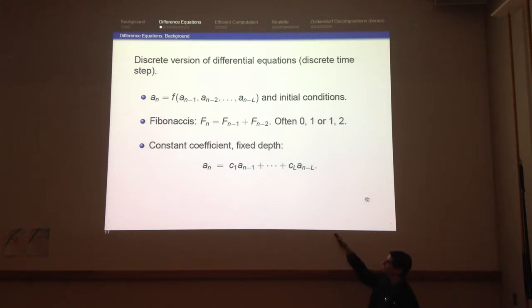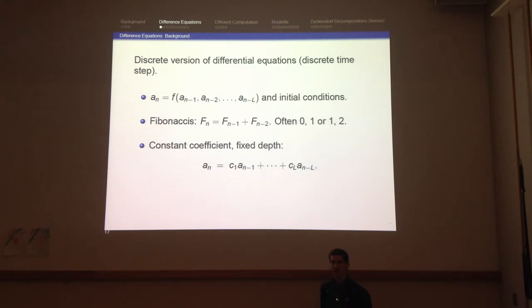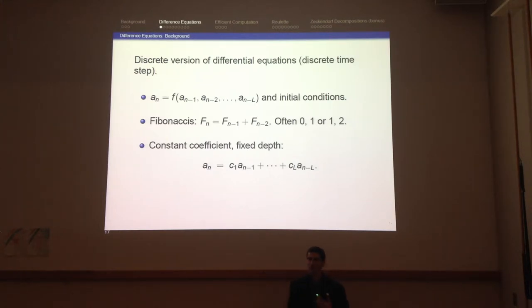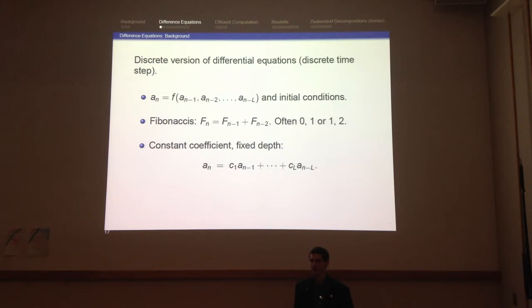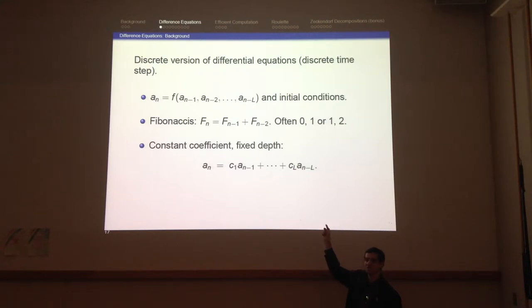For the most part we'll look at constant coefficient, fixed depth recurrences — the function just multiplies each of the previous L terms by a fixed constant and adds them. The Fibonacci numbers are the special case with L equals 2, c1 equals c2 equals 1. Computing Fibonacci numbers term by term is easy for small n, but can you give me the two-millionth Fibonacci number? Eventually, but it would take very long. The amount of time and the size of the numbers make this algorithm very expensive. I'm going to show you a way to bypass the algorithm and quickly write down the answer.